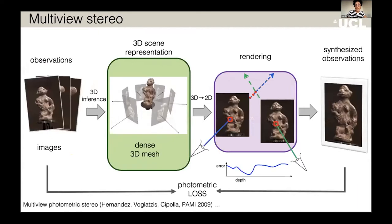Another example is multi-view stereo, where the observations are the images themselves and the problem is: can we reconstruct a dense 3D mesh such that when we re-render our estimate back onto the images, our synthesized observations agree with our inputs? This methodology is also called analysis by synthesis, and we use a photometric loss to guide the estimation of the depth of each point. The inference of the 3D representation parameters is done via optimization, but the intuition is that we could also use neural networks to represent the 3D scene, given that our loss is the ability to re-synthesize the original images.